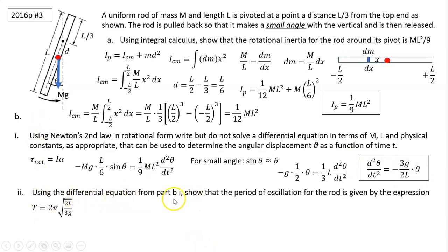Part b2. Using the differential equation in b1, this differential equation to show that period of oscillation for the rod is given by this expression. So we know this is simple harmonic motion. In simple harmonic motion, period and angular frequency is related by this relationship. T equals to 2 pi divided by omega. We also know alpha equals to negative omega squared times theta. And alpha equals to d squared theta over dt squared. Compare these two equations. You can see omega squared equals to 3g over 2l. So omega equals the square root of 3g over 2l. Plug omega here. When you divide, you multiply its reciprocal. So T equals to 2 pi. Reciprocal of omega is square root of 2l over 3g.